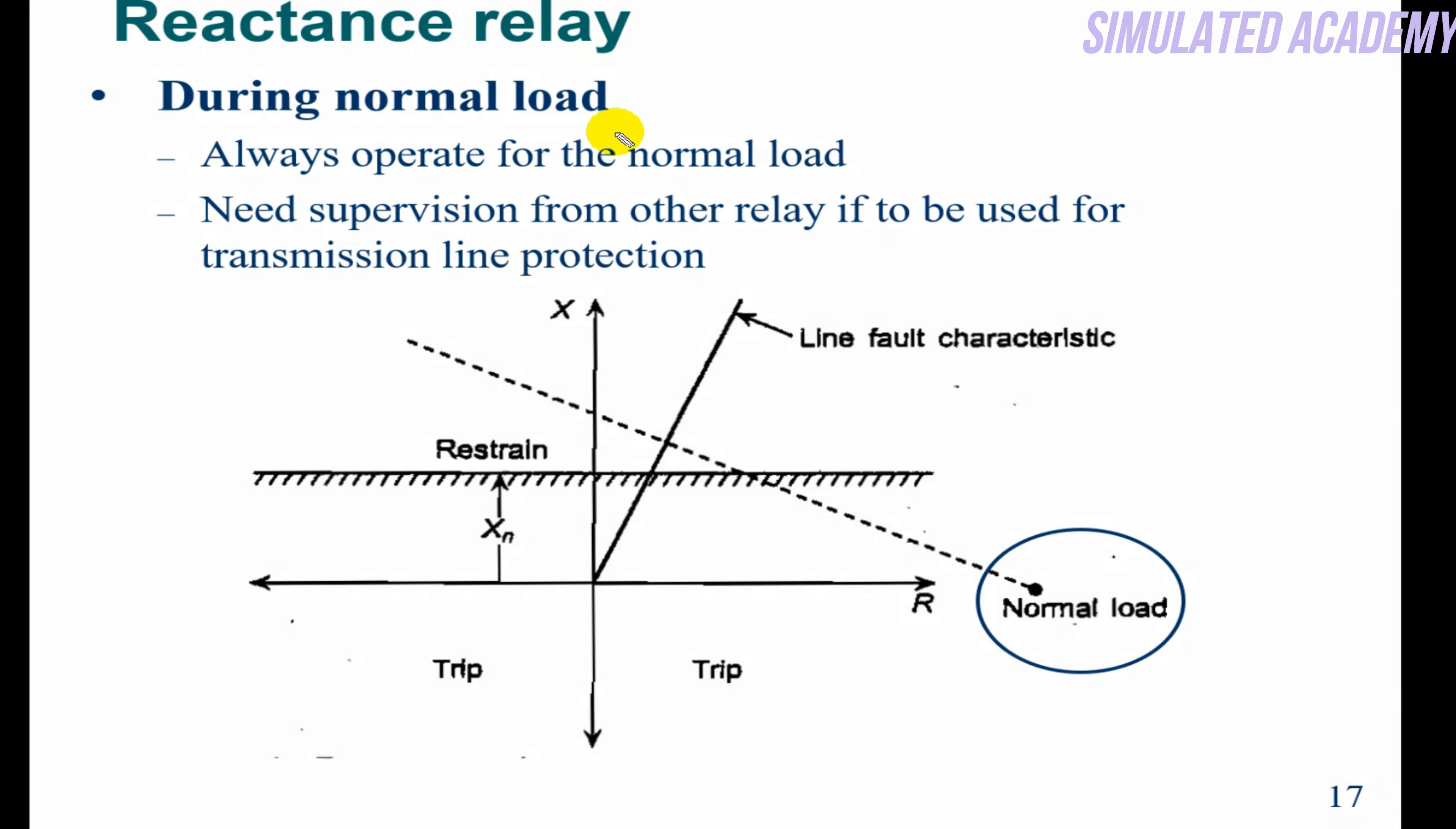During normal load, it will operate always at normal load. Because the normal load line lies in this region—the trip region—because whatever reactance there is, the relay will operate.